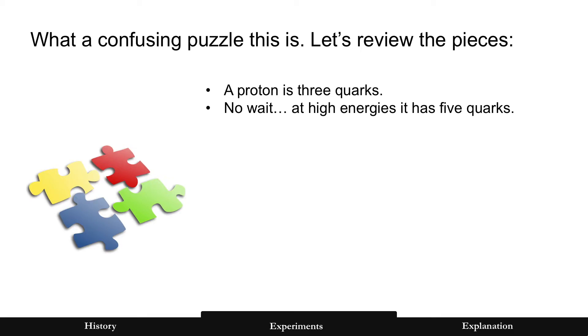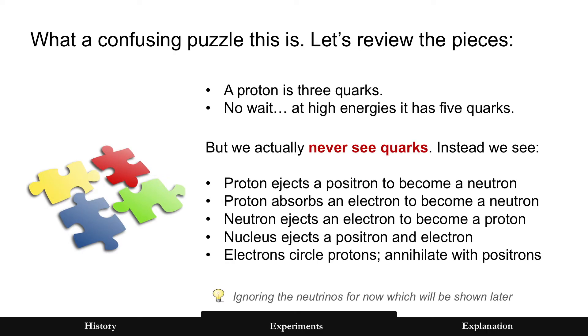Well, it certainly is a confusing puzzle. So let's review the pieces that we have so far, because this is what we need to do to put together the entire picture. 1968: A proton has three quarks. Oh, no, wait. At high energies now, it has five quarks. But we never see quarks. Instead, we see a proton ejects a positron. A proton absorbs an electron. A neutron ejects an electron. Nucleus of an atom ejects a positron and electron. Electrons circle protons, but they annihilate with positrons. It's a confusing mess. But none of that do you ever see a quark.